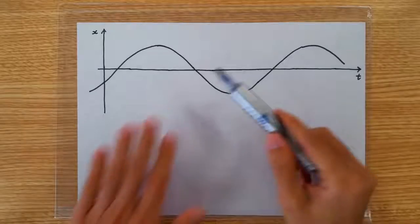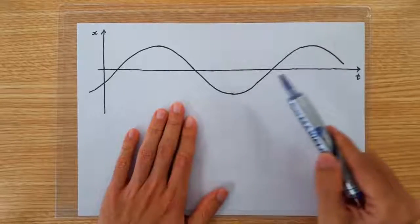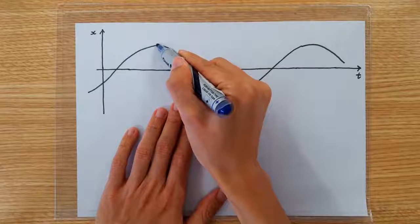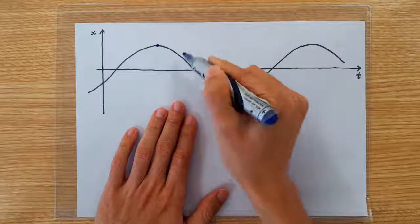A displacement time graph will help us see the situation more clearly. So we are talking about the time it takes for the pendulum to go from the extreme position to half the amplitude.